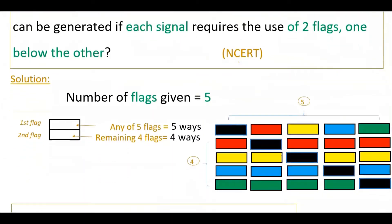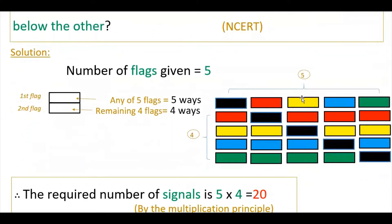For example, consider these five different flags. You can arrange one below the other. If you arrange the black color flag in the first box, then you can arrange red, yellow, or any of the other colors in the second position. So if you arrange any of these five flags in the first box, you can arrange any of the remaining four flags in the second box.